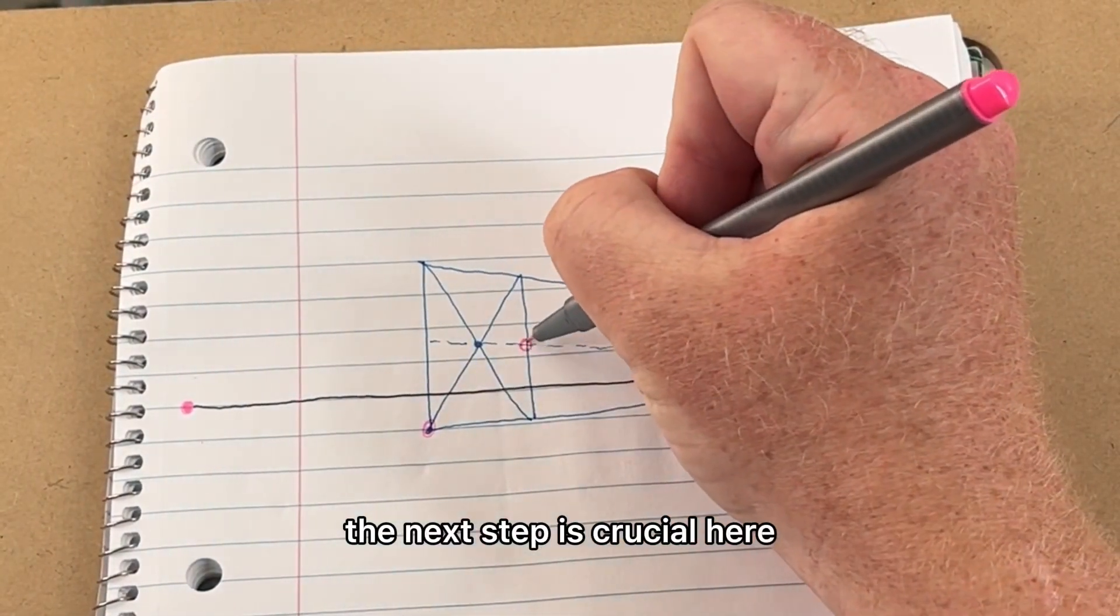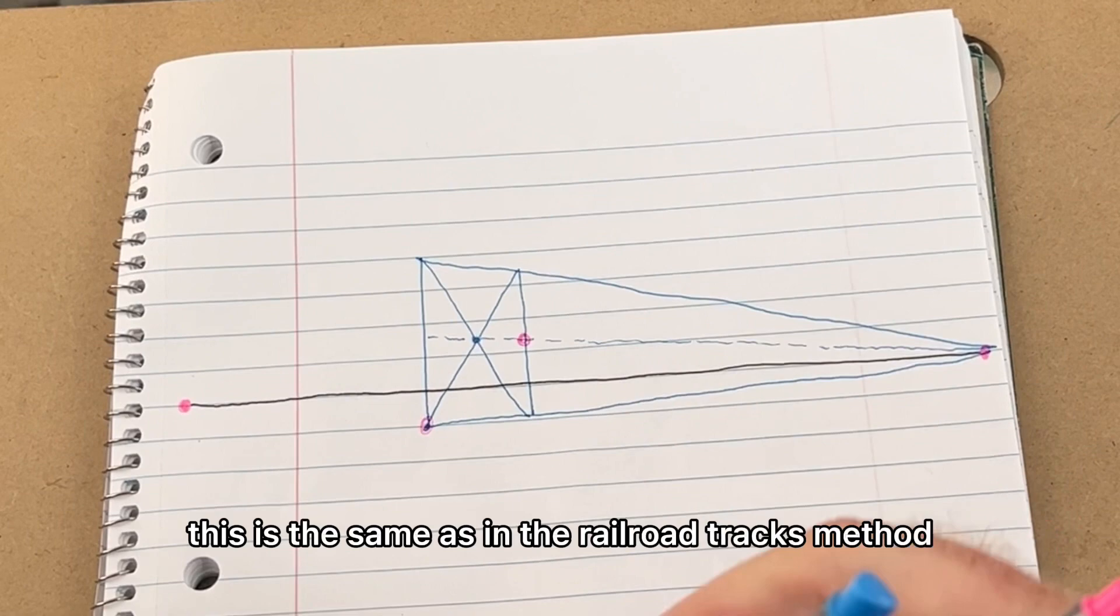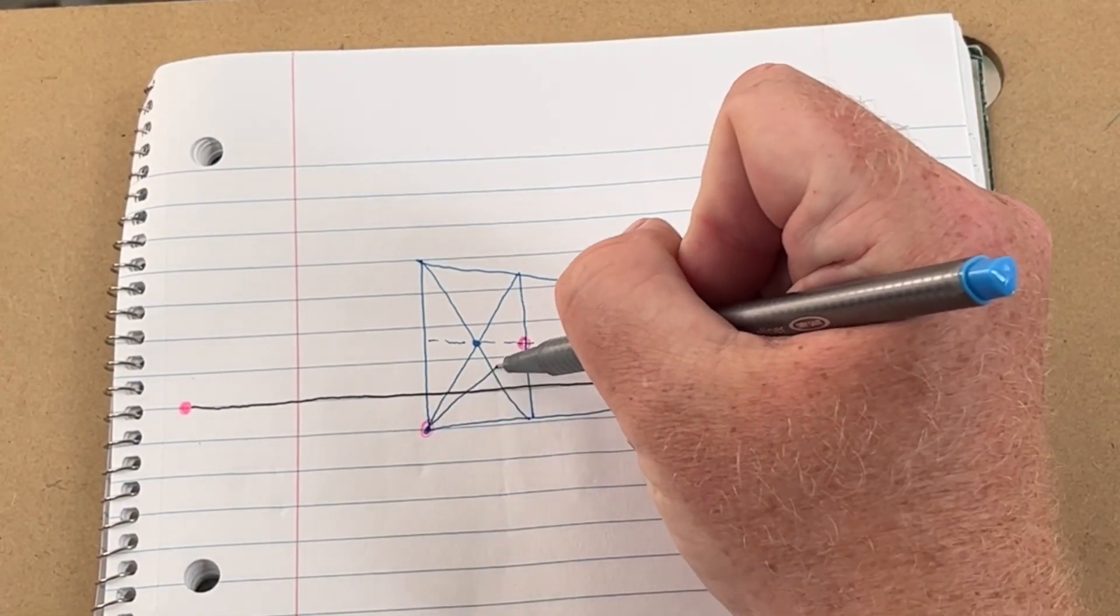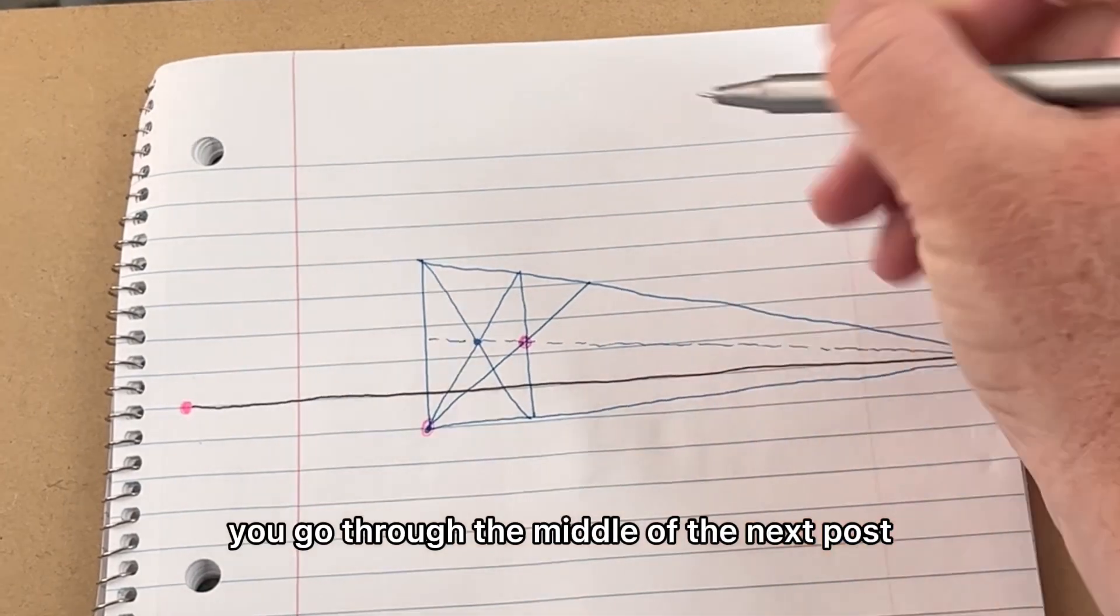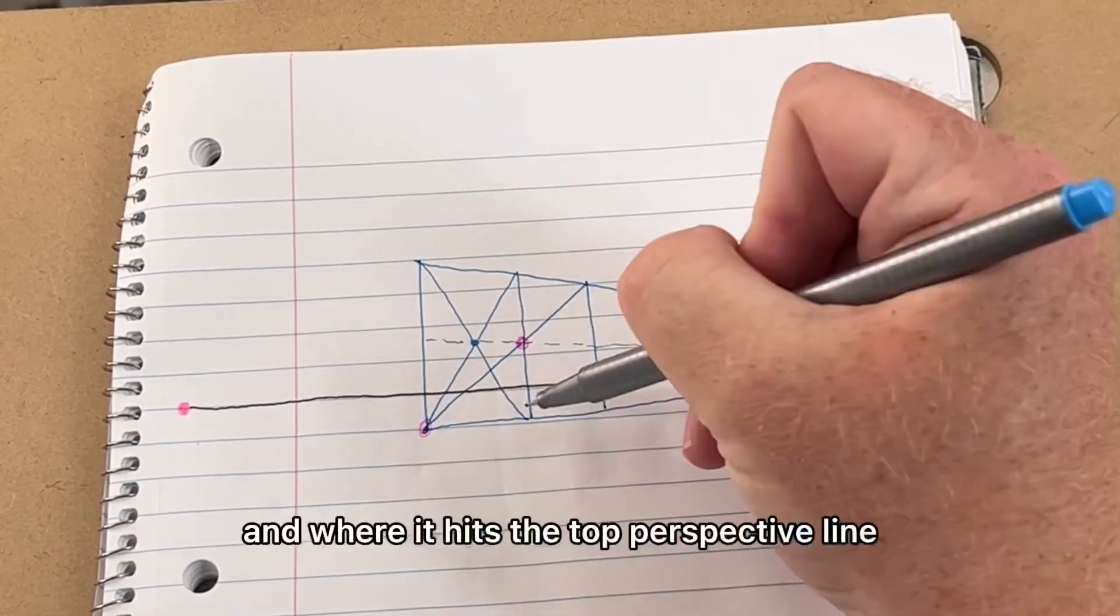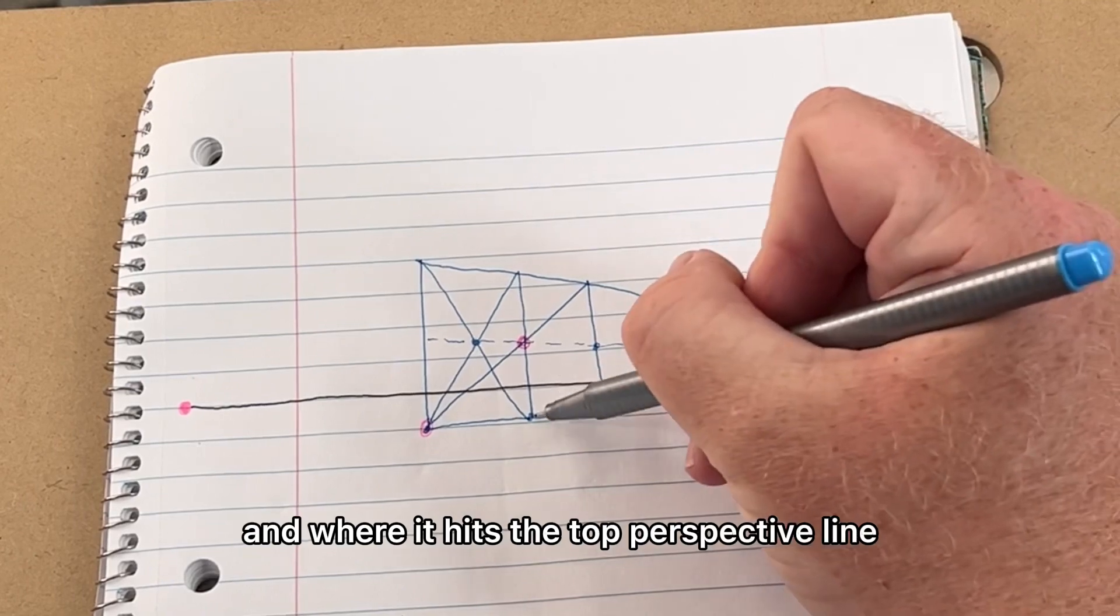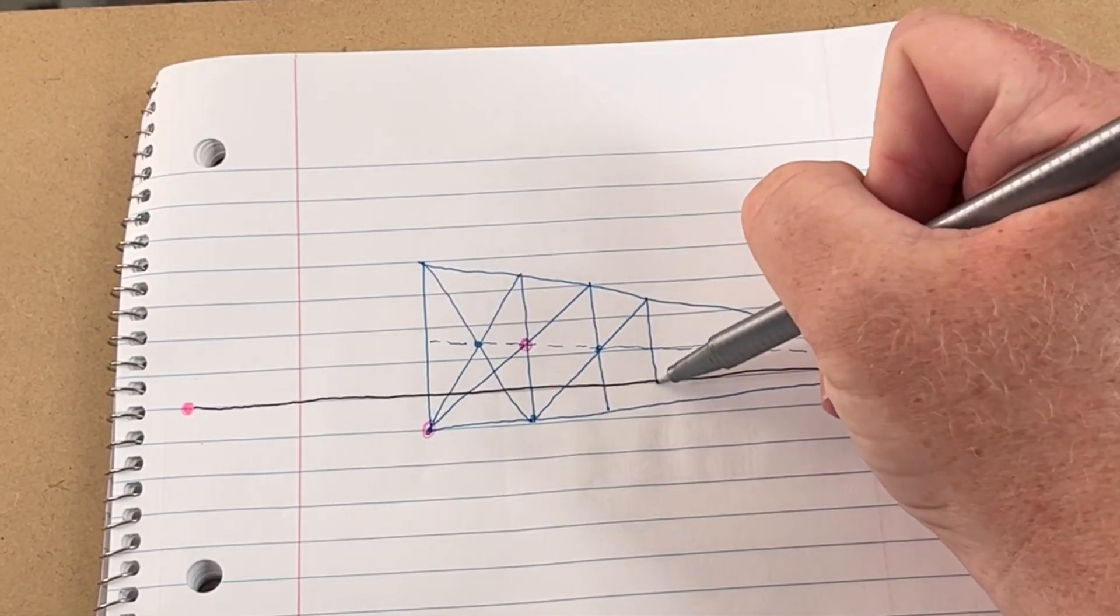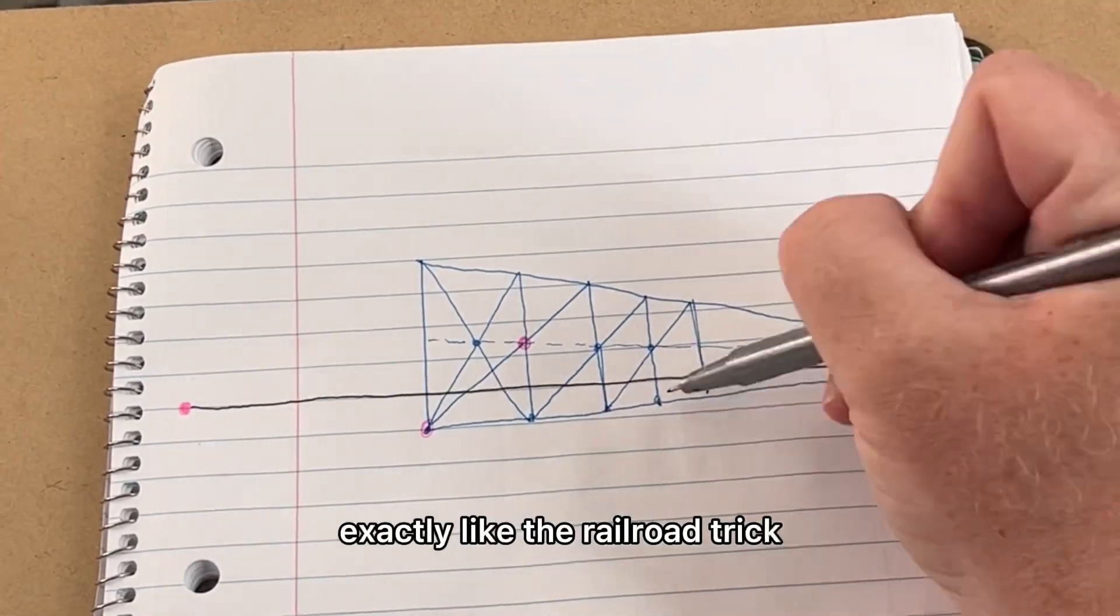The next step is crucial here. This is the same as in the railroad tracks method. From the bottom corner nearest you, you go through the middle of the next post, and where it hits the top perspective line, that is the location of the next post, and so on and so forth, exactly like the railroad trick.